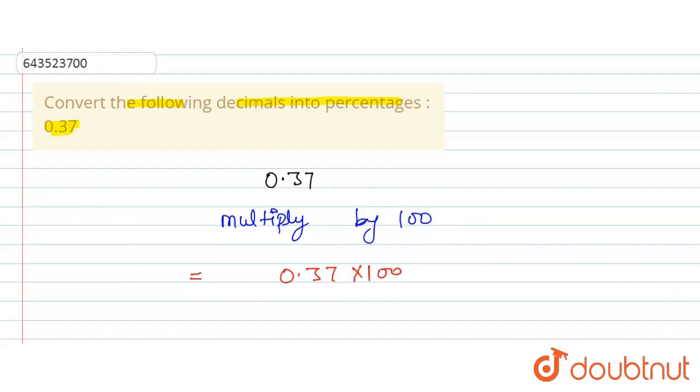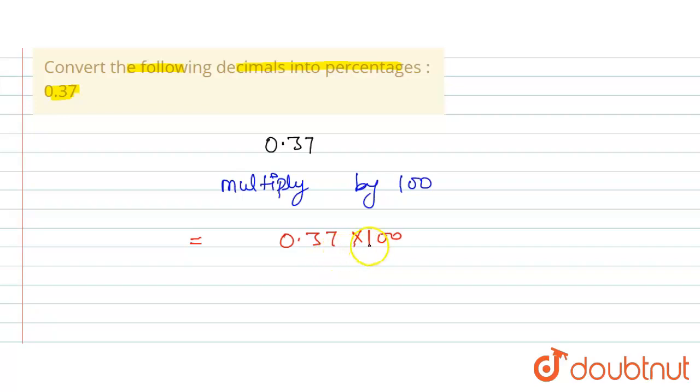When you multiply by 100, we will shift the decimal place from left to right after two digits, so this becomes only 37.